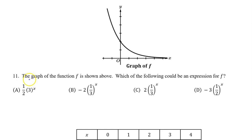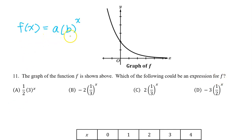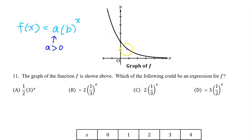Number 11. The graph of the function f is shown above. Which of the following could be an expression for f? Here's the model for an exponential function. If the a value is positive, the curve is above the x-axis. If the a value is negative, the curve is below the x-axis. Obviously the curve is above the x-axis, so the a value should be positive.